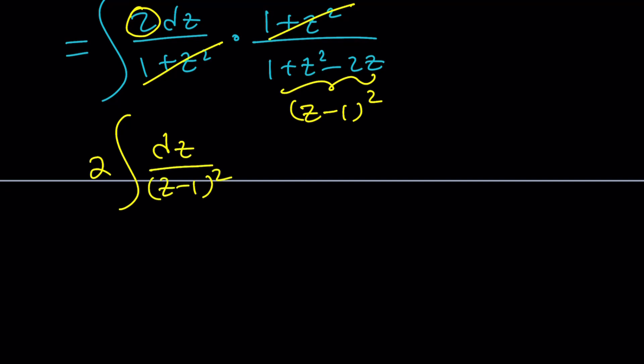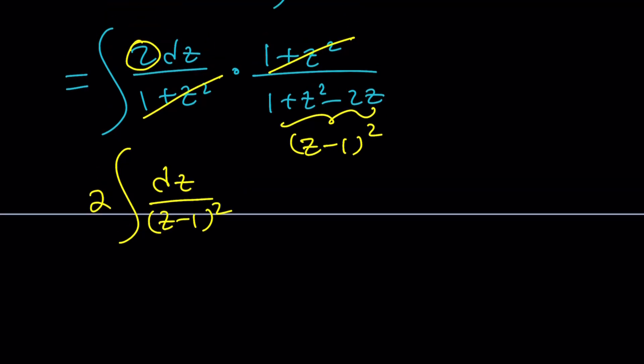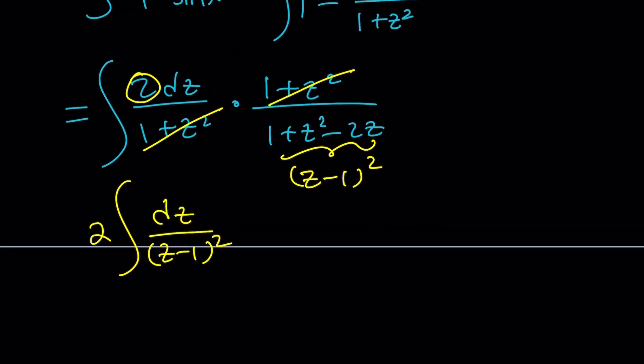But dz over, notice that this expression is z minus 1 quantity squared. So we're basically getting from here 2 times dz over z minus 1 squared. Now what does that equal? That would be a good question. Well, here's the thing. If you have dz over z squared, its integral is going to be negative 1 over z plus c. Because if you differentiate 1 over z, you get negative 1 over z squared. Of course, I'm talking about differentiating with respect to z. That's why we have dz here. Make sense? So this should be the same thing with the minus sign.